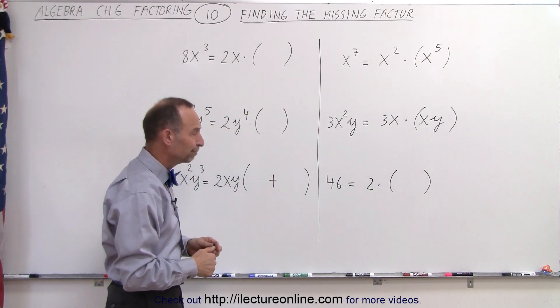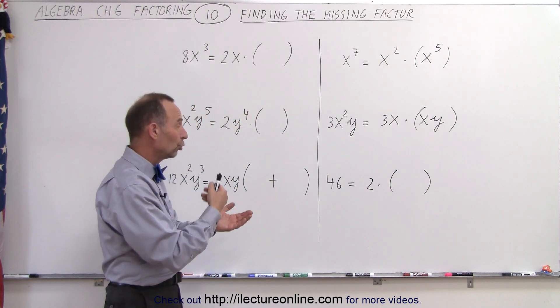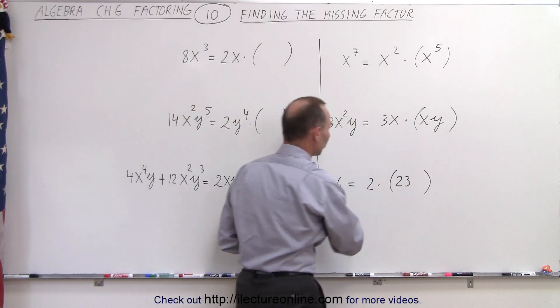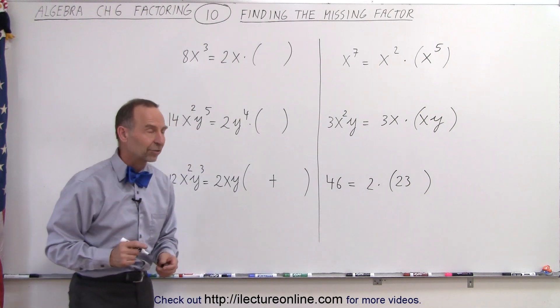How about the next one? Now, that should be easy, just a number. 2 times what gives us 46? In this case, 2 times 23 gives us 46. So there's the missing factor.